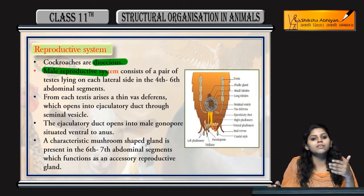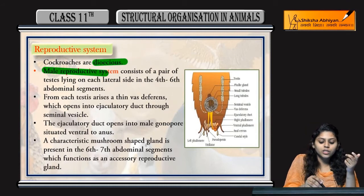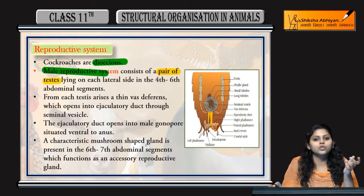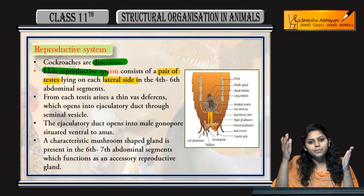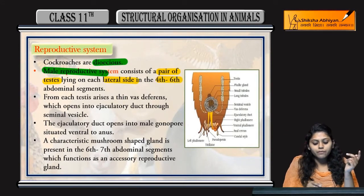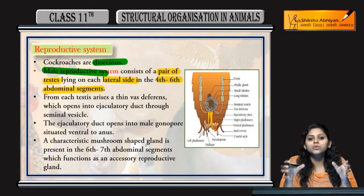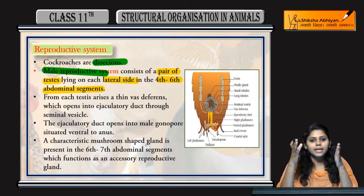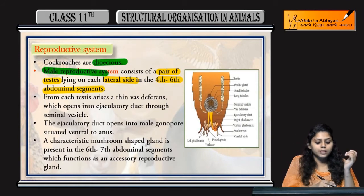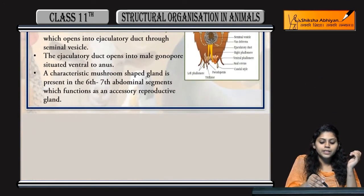Coming to the male reproductive system, which consists of a pair of testes present on the lateral side in the 4th to 6th abdominal segment.